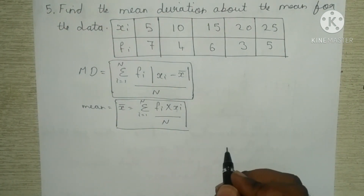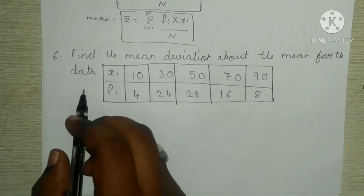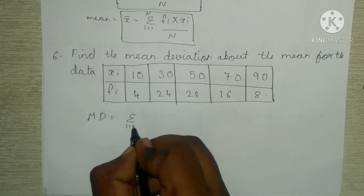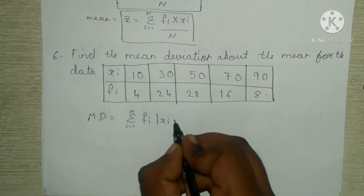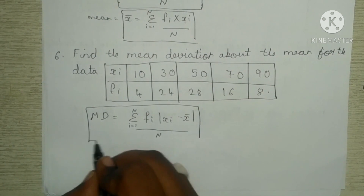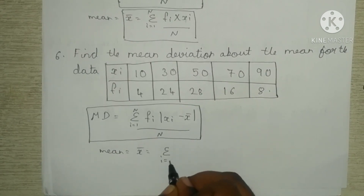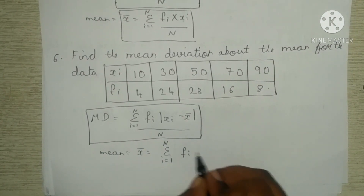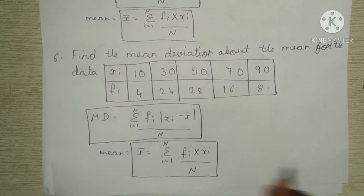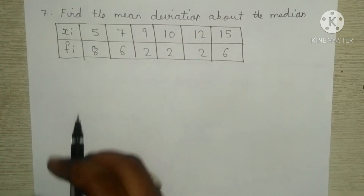These two formulas are used to solve the fifth question. For the sixth question — find the mean deviation about the mean for the data, similar to the fifth question — x and f are given. The mean deviation formula is summation from i = 1 to n of f_i × |x_i minus x-bar|, all divided by N. The mean formula is x-bar = summation from i = 1 to n of f_i × x_i, divided by N. These two formulas are used to solve the sixth question.